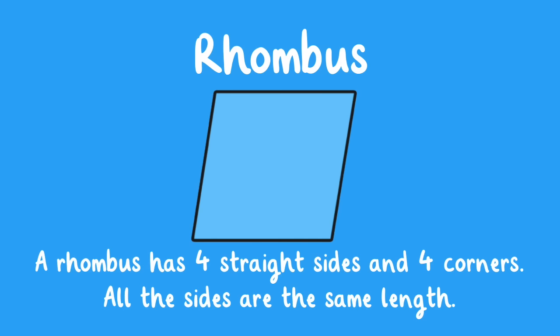Rhombus. A rhombus has four straight sides and four corners. All the sides are the same length.